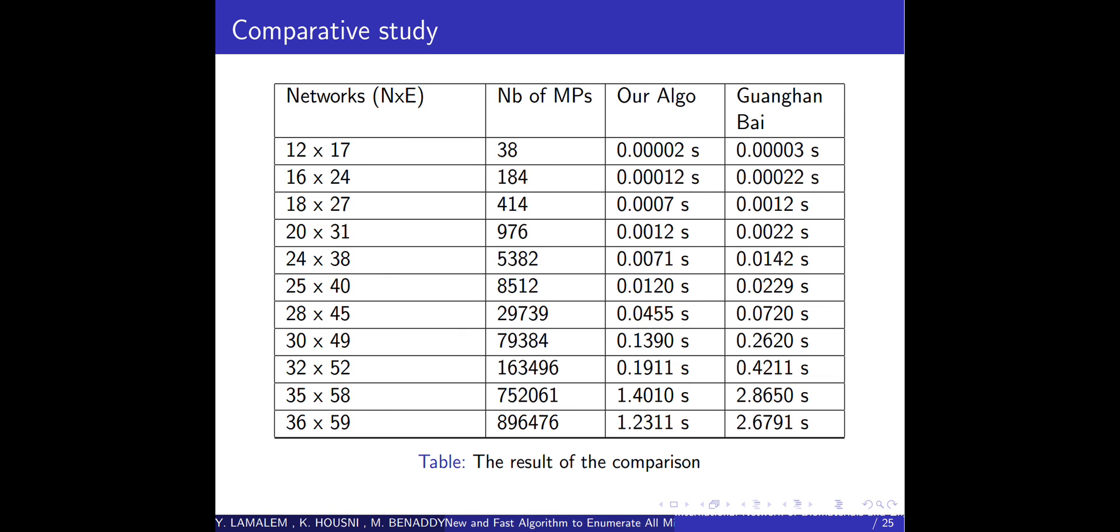Now we have a table that contains four columns. The first column is the network, and in each row we increment the number of edges and the number of vertices. The second column contains the number of minimal paths found by our algorithm and the Ganggan Bay algorithm. The third column contains the execution time results for our algorithm, and the fourth column contains the results for Ganggan Bay algorithm.